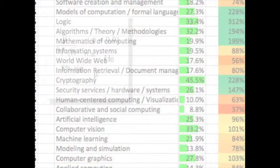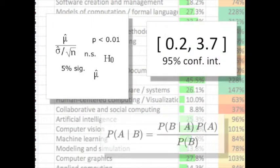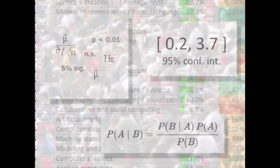P-values, confidence intervals, Bayesian stats. What does it all mean?